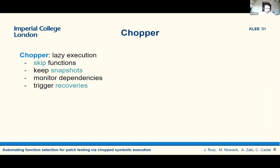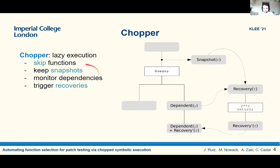Then you keep snapshots of the execution states pointing at these function calls. Then you monitor dependencies to the data that these functions write, and you trigger recoveries when you need to. Graphically, you execute the program symbolically with KLEE, as you normally would, until you reach a function call to a function that you would like to skip — for example, f. You keep a snapshot of the execution state right before the call, and you move on with the symbolic execution.